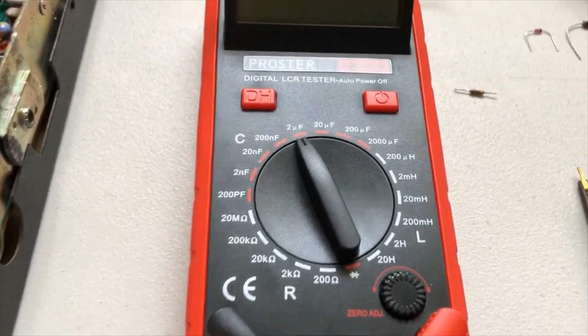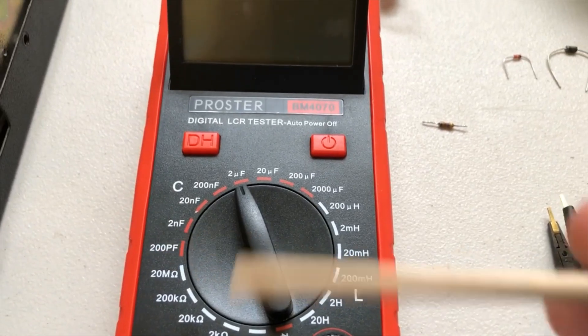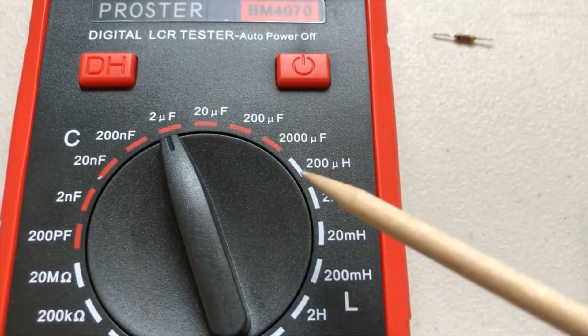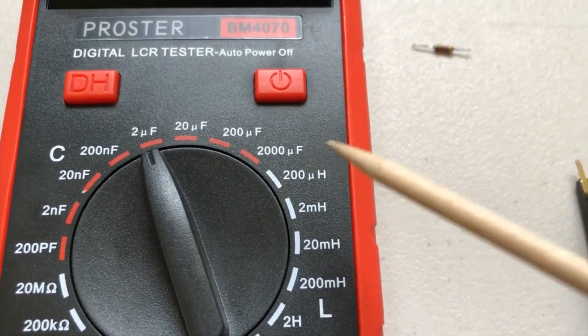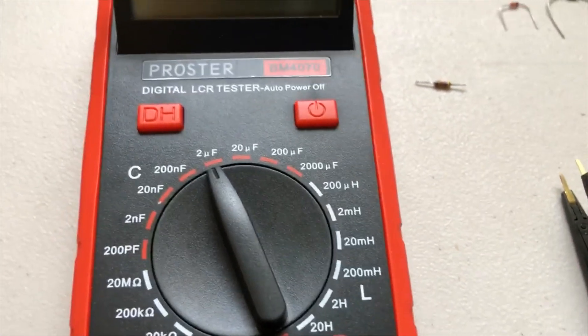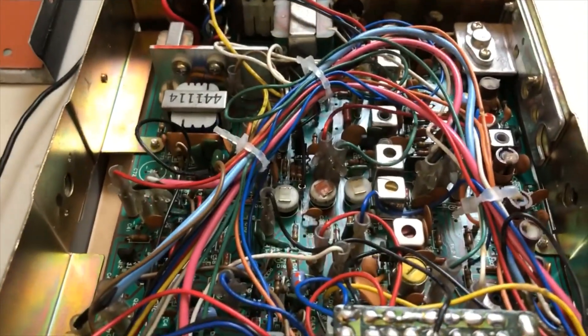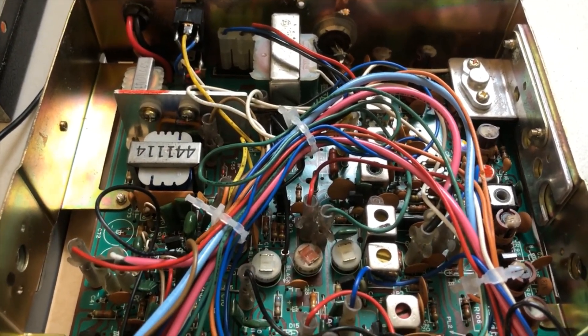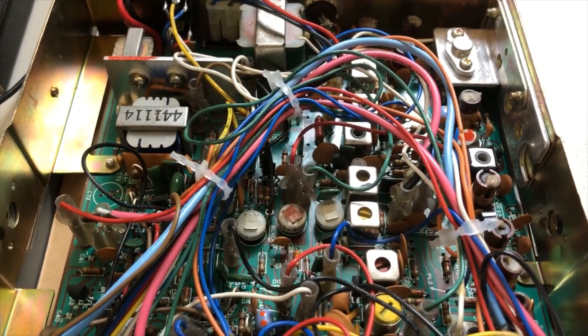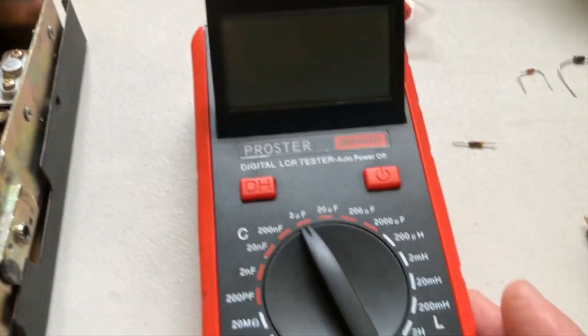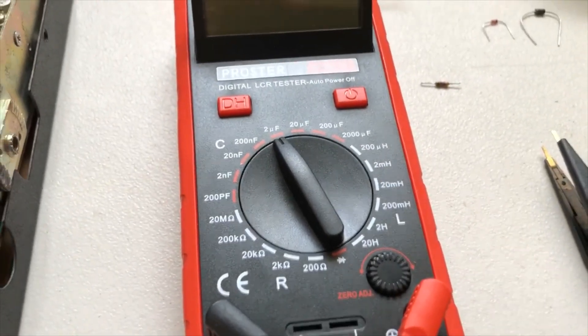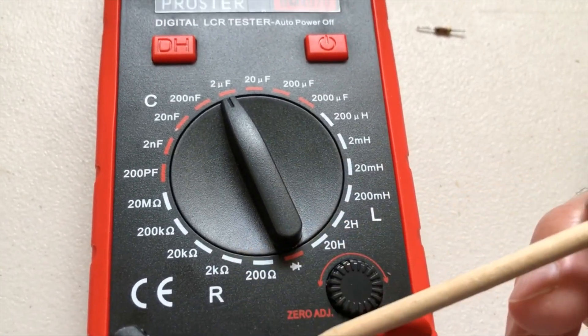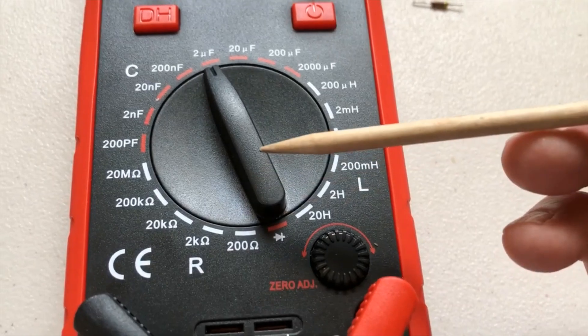Now my test meter here goes all the way from 200 picofarads all the way up to 2000 farads, which should be fine for most CB radios that I work on unless I have a capacitor with a 110 power supply. Then it might have a larger value than my meter can read.